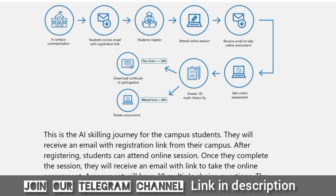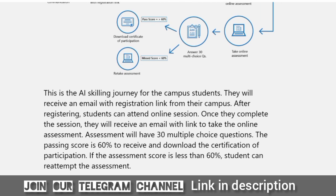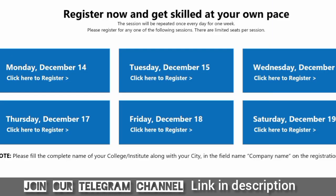Students will receive an email with a registration link for their campus. After registering, students can attend the online session. Once they complete the session, they will receive an email with a link to take an online assessment. The assessment will have 30 multiple-choice questions. Participants need to score 60% or above, and students can reattempt — there are three attempts available.